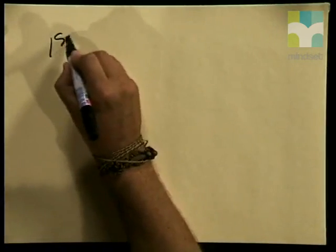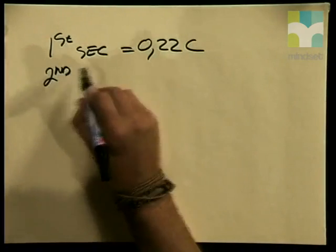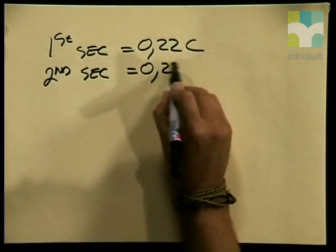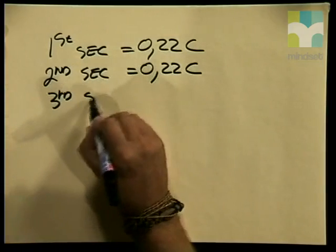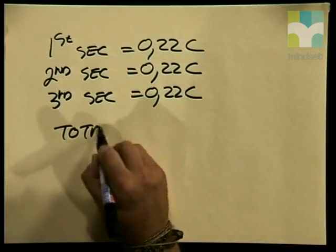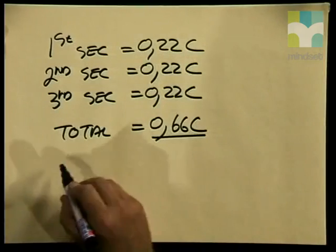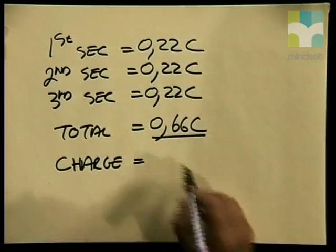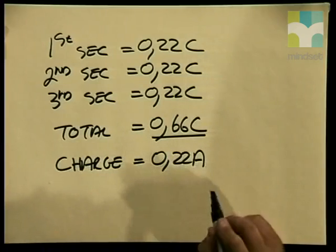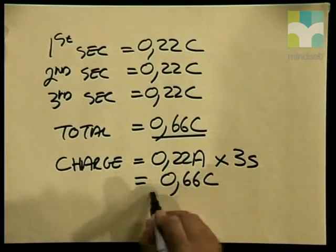Now can you tell me how many coulombs of charge will pass through the conductor in three seconds? In the first second, I will have 0.22 coulombs passing through the conductor. In the second second, I will also have 0.22 coulombs passing through. While in the third second, again, I will have 0.22 coulombs passing through it, which gives me a total of 0.66 coulombs. Therefore, the amount of charge equals 0.22 amperes, my current, multiplied by the time of three seconds, to give me a total of 0.66 coulombs.